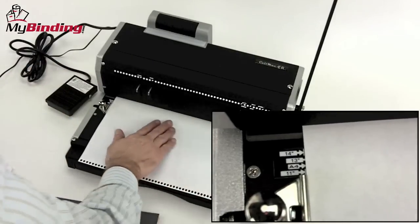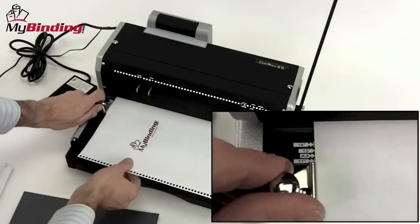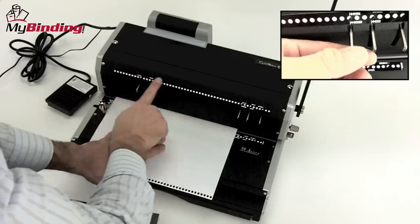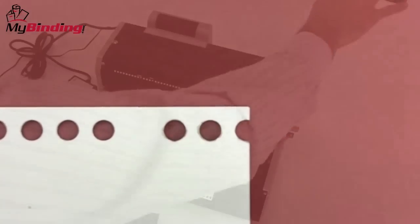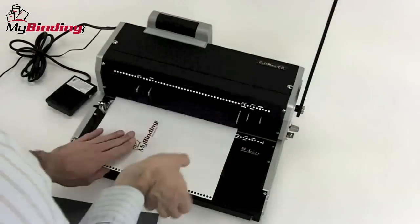With scrap paper, set the side margin control knob so that all punches will be consistent throughout your whole project. And then disengage any of the dies that you need so you have no half-hole punches. Bring the lever arm down to make your test punch.